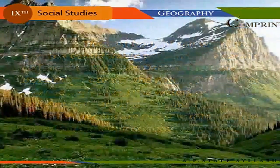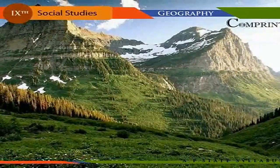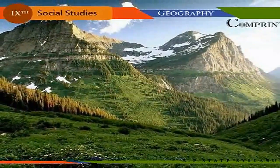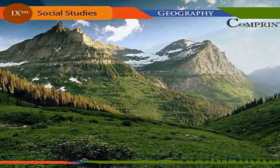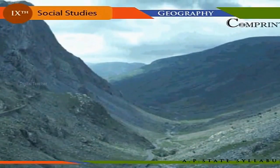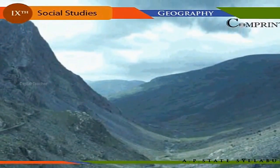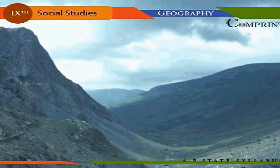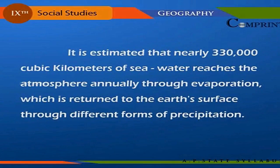Oceans are so deep and vast that if all the irregularities on the Earth — like the mountains, plateaus, hills, valleys, and oceanic trenches — were adjusted into a uniformly smooth surface, the oceanic waters would engulf the entire surface to a depth of 3,650 meters. It is estimated that nearly 330,000 cubic kilometers of seawater reaches the atmosphere annually through evaporation.